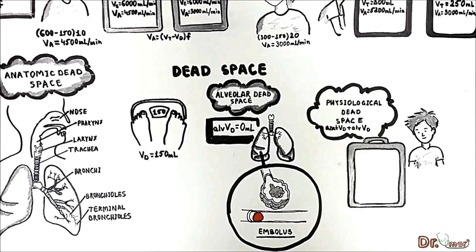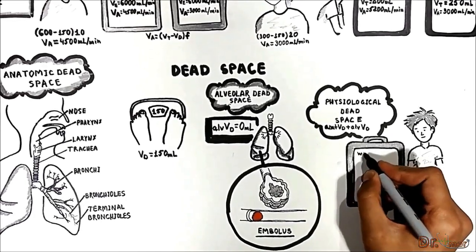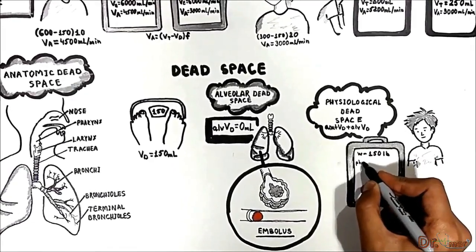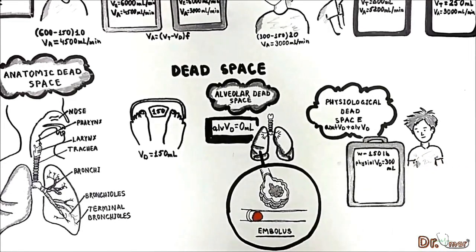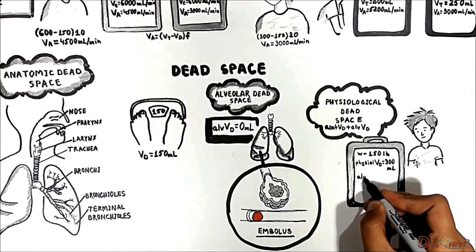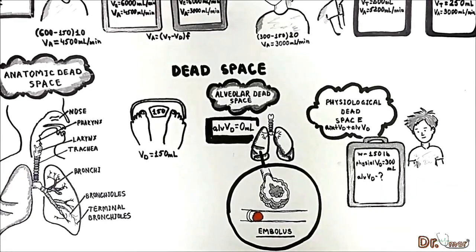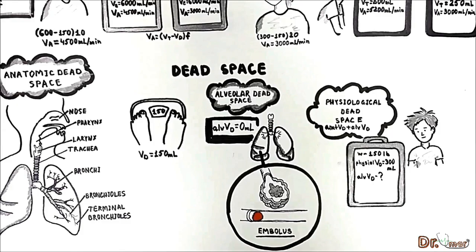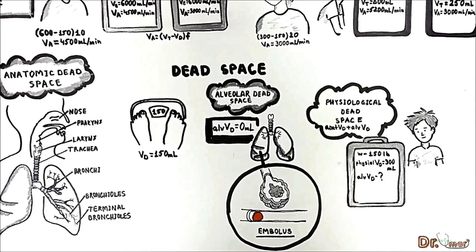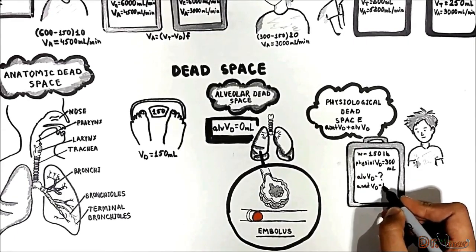You can determine whether the patient has alveoli that are ventilated but not perfused. Suppose they give you a patient weighing 150 pounds, and the measured physiologic dead space is 300 milliliters. Can we determine if lung alveoli are being normally ventilated but not perfused — can we determine alveolar dead space? Yes, we can. The normal anatomic dead space in a person weighing 150 pounds is 150 milliliters, since the volume in milliliters approximates weight in pounds.